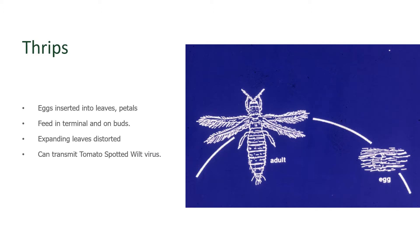When adult thrips are laying their eggs, they're inserting them into the plant itself, typically in the fruit or in the growing tips of the stem or the branches. As the larva hatches, they feed in the immediate area and it causes a distortion of the fruit and it can cause distortion of emerging leaves. So the plant will begin to look a little odd.